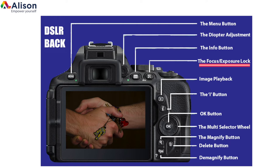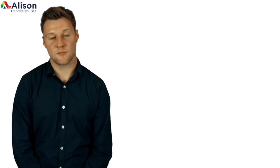You will begin to use the autofocus or auto exposure lock after you've begun to feel comfortable with the camera. When this button is held while using autofocus and auto exposure, those two settings will lock. So if I change the frame or move the camera to another position, the pictures that I take will remain focused and correctly exposed. The image playback button allows you to review your images and videos on the LCD screen.